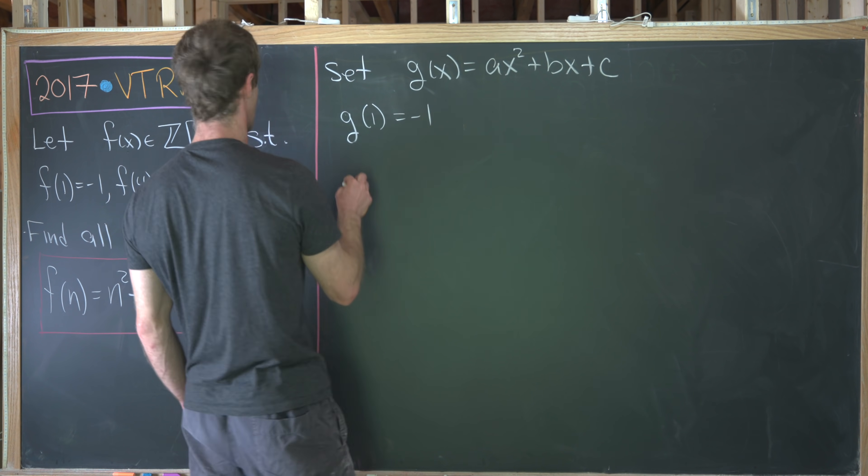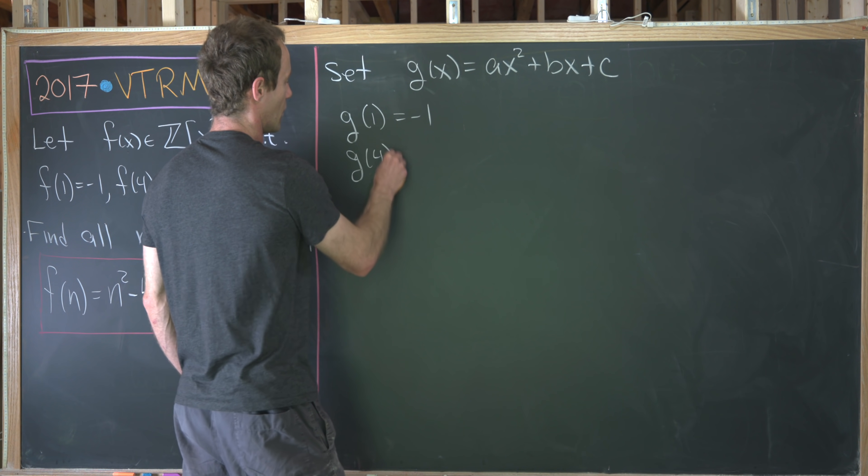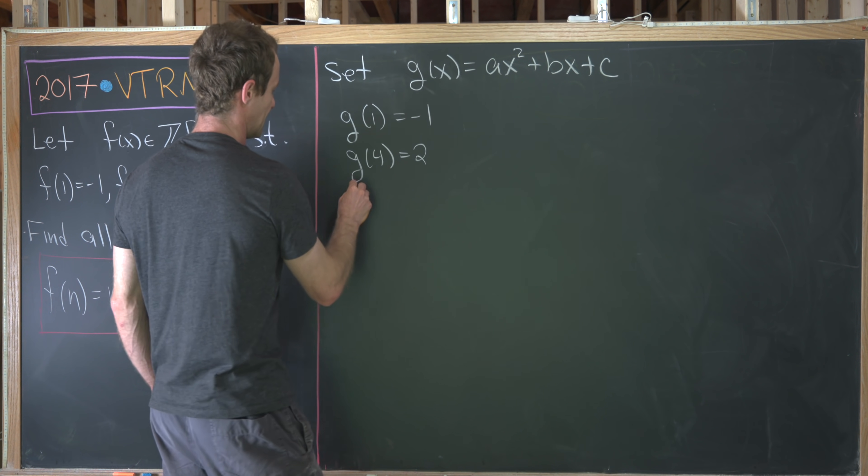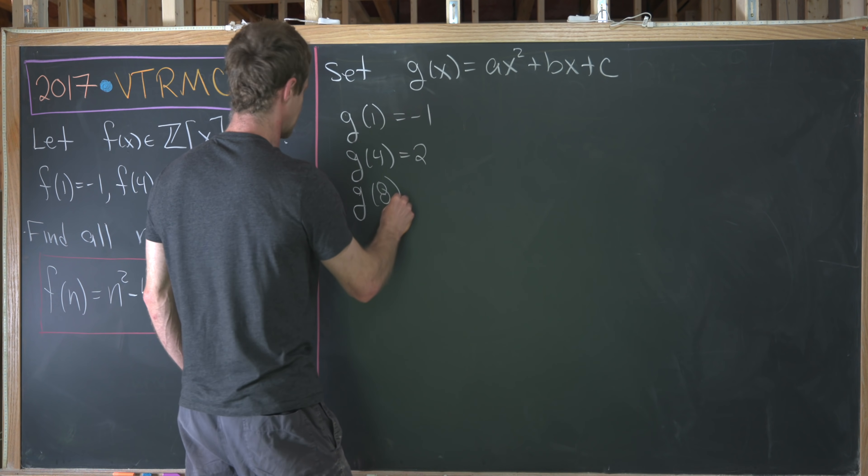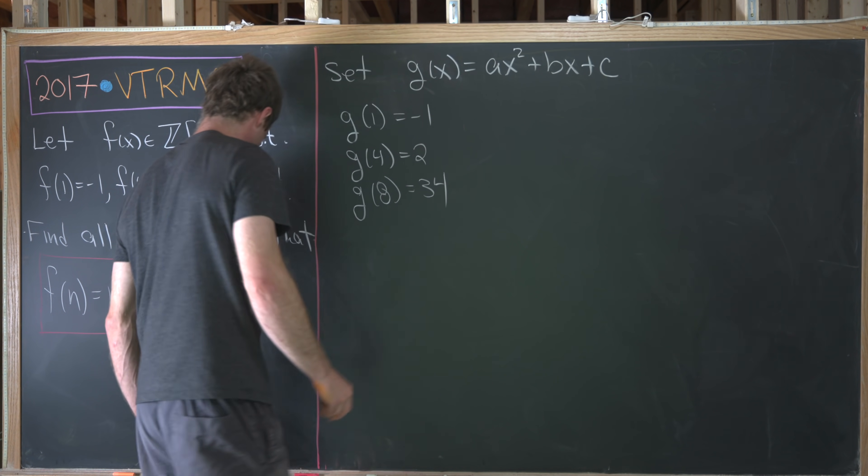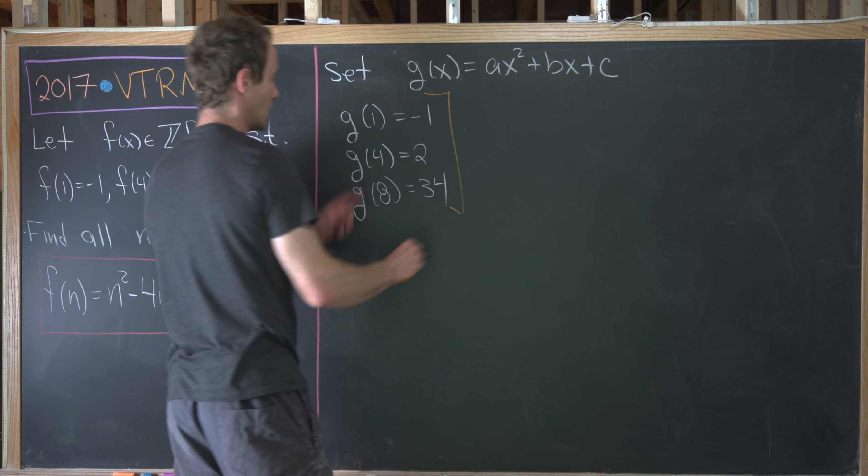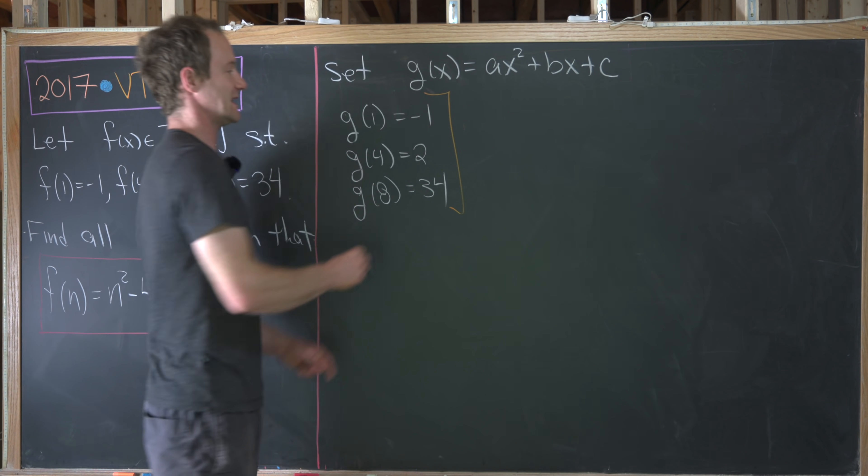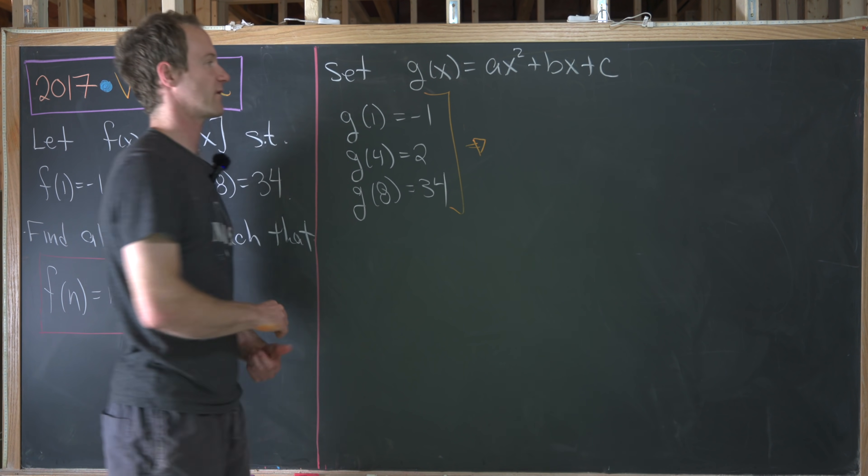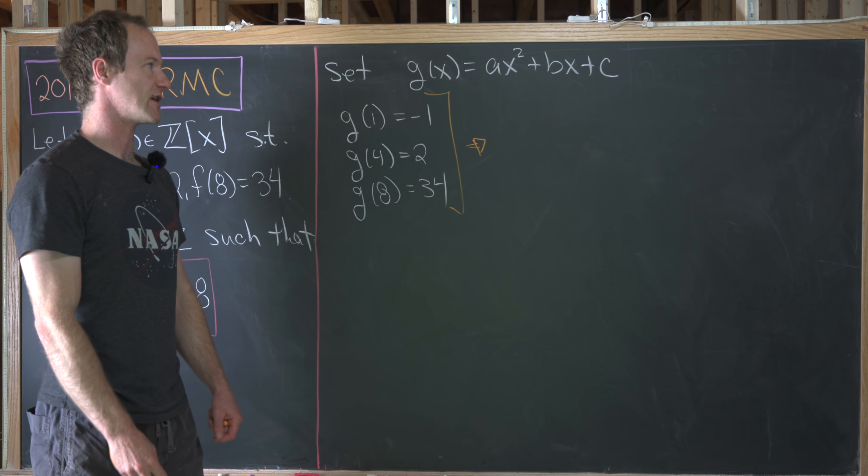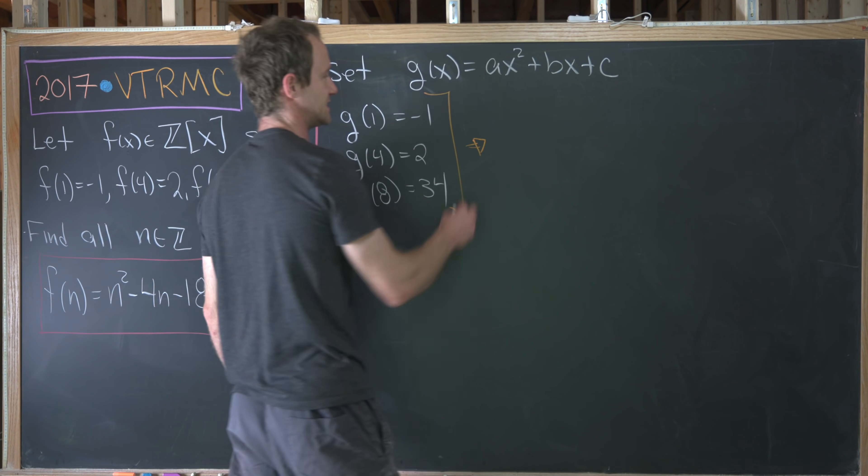g of 1 equals negative 1, g of 4 equals 2, and then finally g of 8 equals 34. Now plugging 1, 4, and 8 into our general form for g will give us a system of linear equations for a, b, and c.